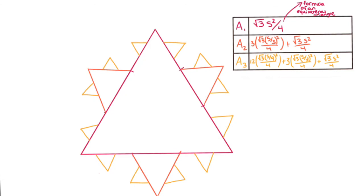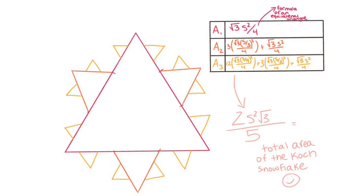If we continue this pattern and simplify the extremely long addition problem, we would be left with a total area of 2 square root 3 times s squared all over 5, a finite area for a fractal with an infinite perimeter.